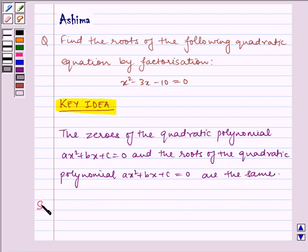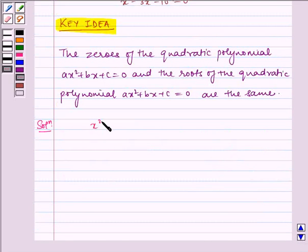Now let us write the solution. Given to us is x squared minus 3x minus 10 equals 0.